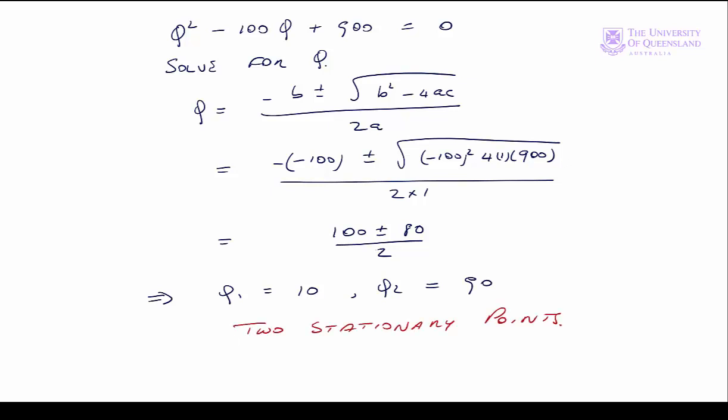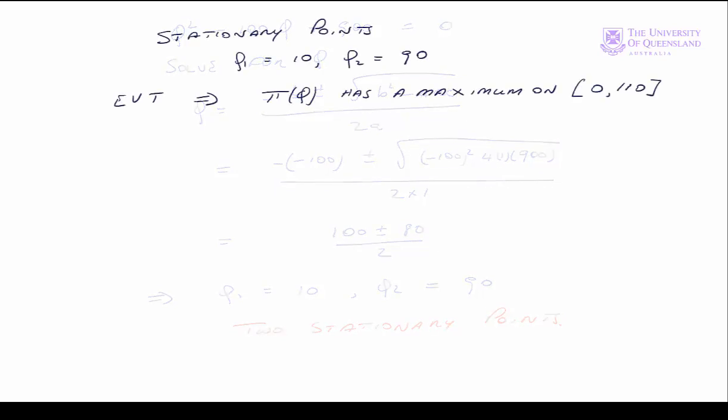Our next step is to determine which one, if any of these two, is the global maximum. We've found two internal stationary points. We know through the extreme value theorem that there is a maximum on the closed and bounded interval, 0 to 110.